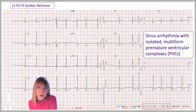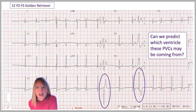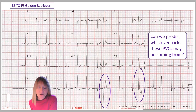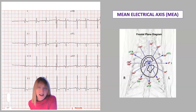The wide and bizarre beats you see without accompanying P waves are PVCs. Our question for today is: can we predict which ventricle these PVCs may be coming from? The answer is yes, and in order to do that, we're going to come back to another previous concept — that of mean electrical axis.